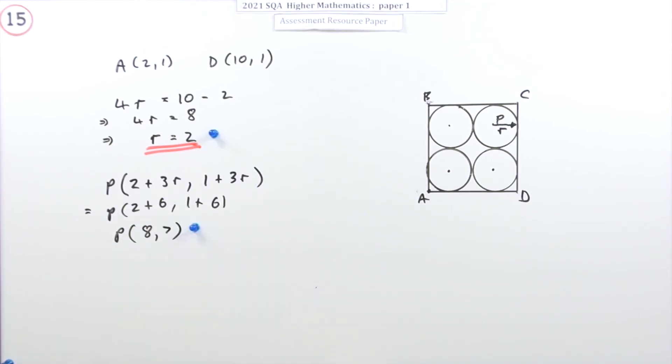Getting (8,7) gets a mark. Probably just stating it would do. Now you can put down the equation of the circle. So what's the equation of the circle?